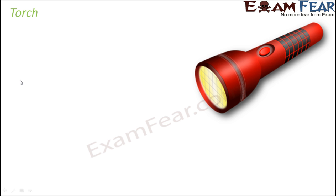A torch has a slider switch here, so you just slide it and it is switched on, giving you light. When you slide it back, it is switched off and it doesn't give you light anymore. So let us try to understand what is inside this torch which makes it operate in this fashion.